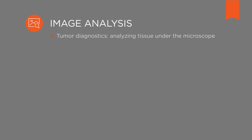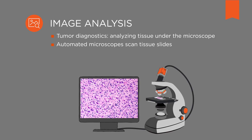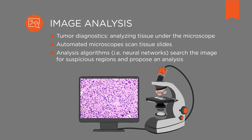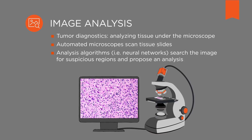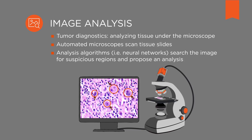Number two: image analysis. In today's tumor diagnostics, sampling and analyzing tissue slides under the microscope is still common practice. With automated microscopes, the image of the slide can be scanned. Modern image analysis algorithms, such as neural networks, can then search the image for suspicious regions to propose an analysis to the pathologist. This can be done in minutes, while the manual investigation takes several hours and relies on a single human operator.